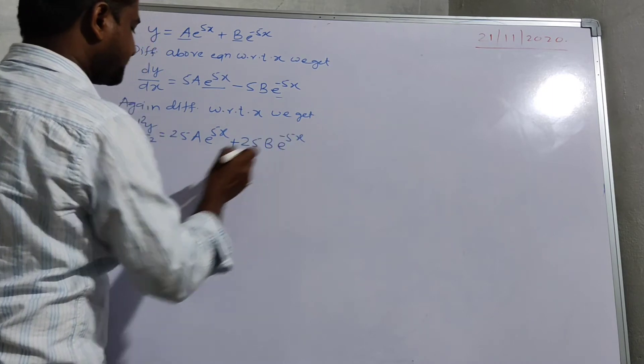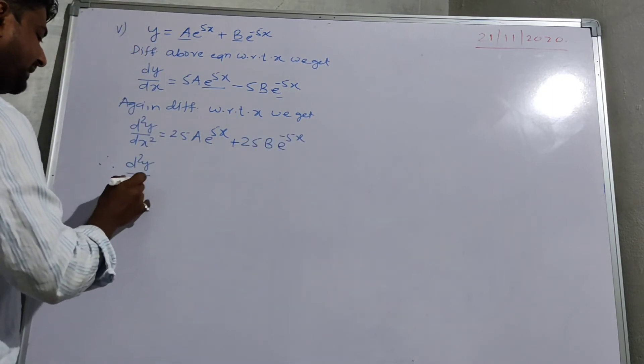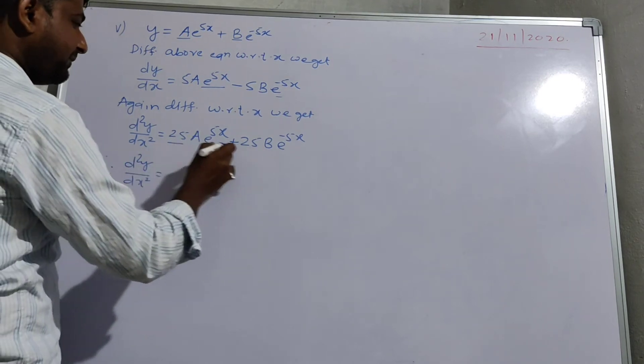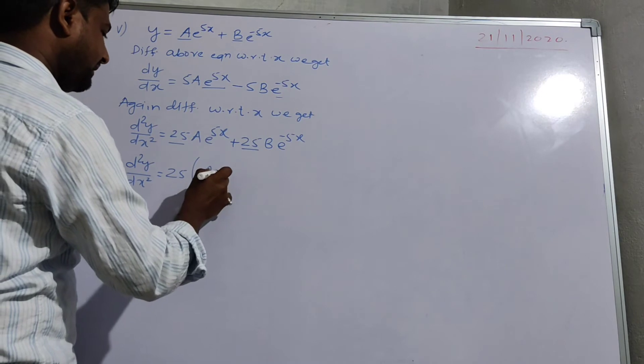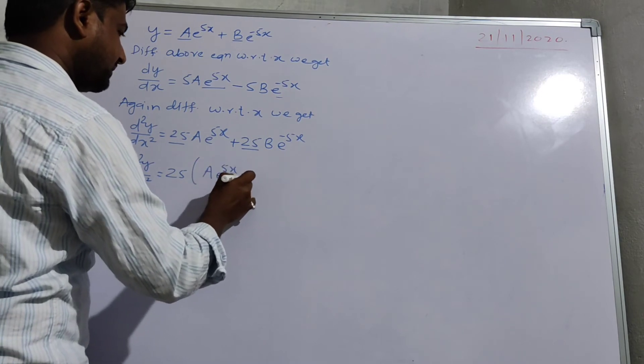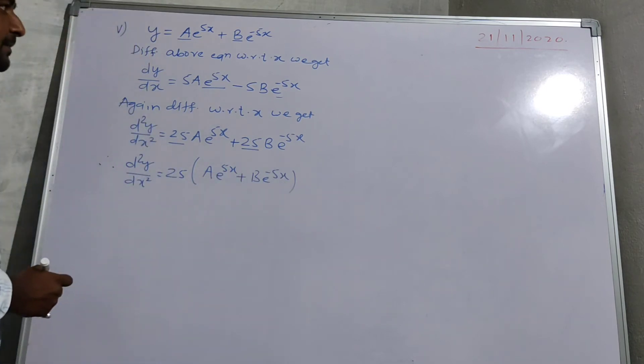25 common, what is left. We write it here: a e to the power 5x plus b e to the power minus 5x.